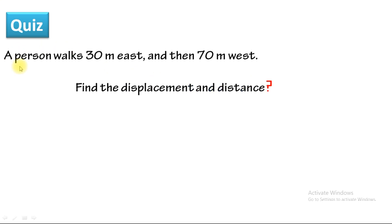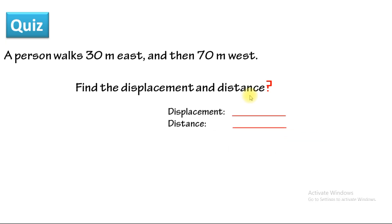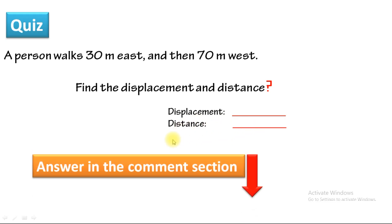A person walks 30 meters east and then 7 meters west. Find the displacement and distance of this person. Try to find the total displacement and total distance covered as a practice exercise.